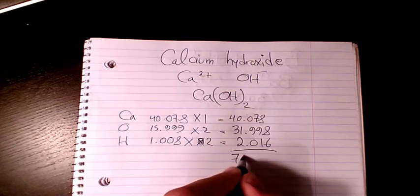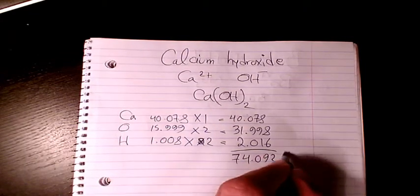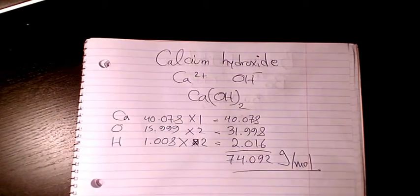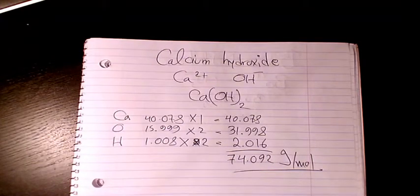That will make it 74.092 grams per mole. So that's the molar mass or molecular weight of calcium hydroxide.